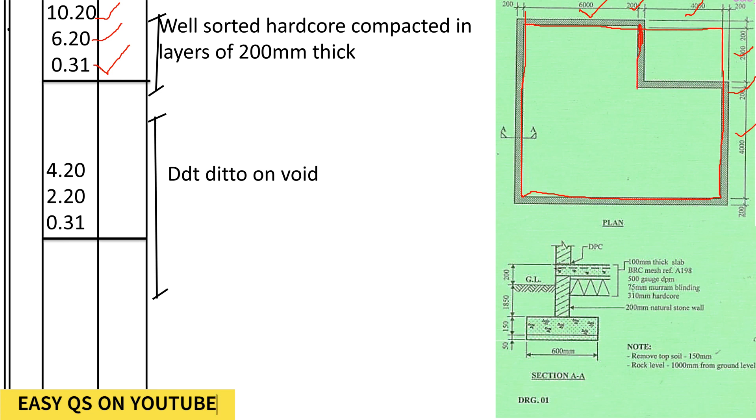wall, so we shall include this one up to here. So the length shall be 4000 plus 200, which is 4.2. Then for the width, it shall be 2000 plus 200 for this wall, it shall be 2.2. Then the depth of the hardcore deducted on void.